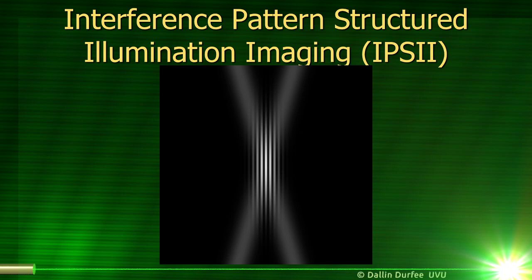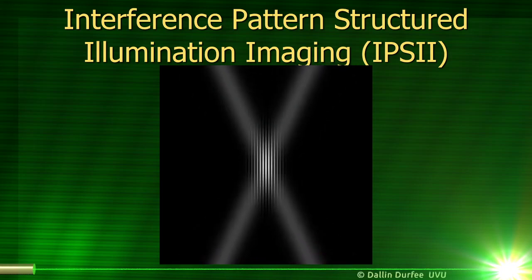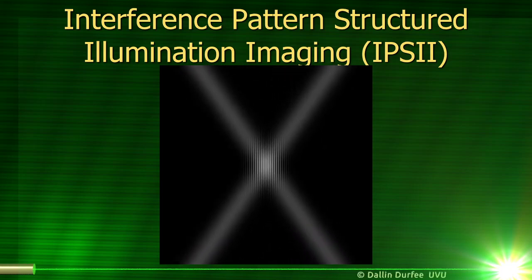In IPSI, we do structured illumination, but we make the patterns by interfering laser beams. If I take two laser beams and cross them, where they cross they will interfere and form a pattern of stripes. As I change the angle of my laser beams, the spacing between the stripes changes, and by changing the orientation of the beams I can make the stripes vertical, horizontal, or anywhere in between. This means we don't need a high numerical aperture lens to project a high-resolution pattern. By measuring the light scattered or transmitted through our object for different patterns, we can figure out what the object is.